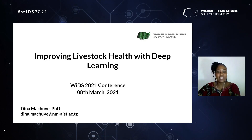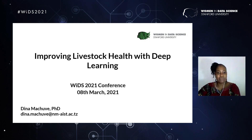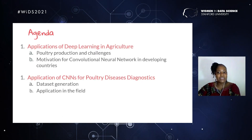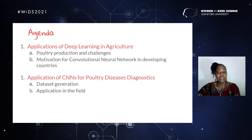Small-scale farming — which means crop farming and livestock farming — is very crucial in the developing world. It supports over 380 million households, and 70 percent of food production in the developing world comes from small-scale farmers. Addressing the challenges they face is very crucial. Today I will cover the motivation for using deep learning in agriculture in the context of developing countries, with a focus on poultry, and the application of CNN in poultry disease diagnostics.